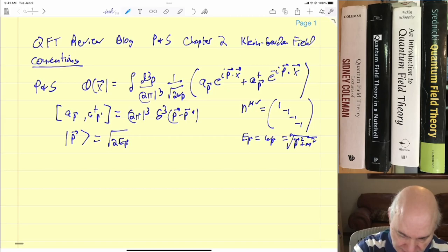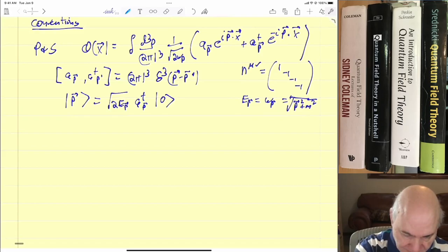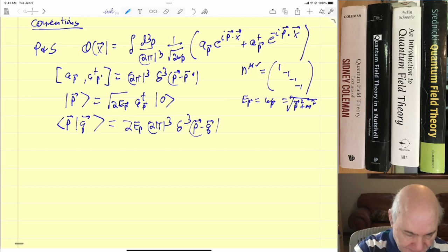So |p⟩ equals square root 2ωp times a†p acting on the vacuum. Again, there's this funny factor here. If you had 2ωp over here instead of the square root, you wouldn't need that factor. Likewise, from this you usually get ⟨p|q⟩ equals 2Ep(2π)³δ³(p-q). That's Peskin and Schroeder.